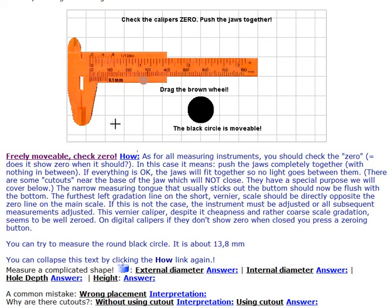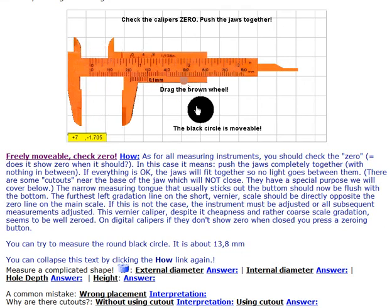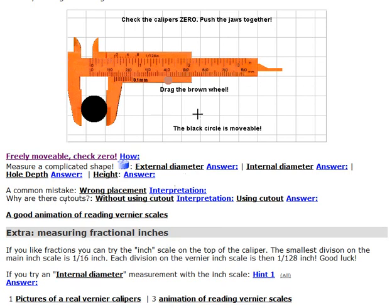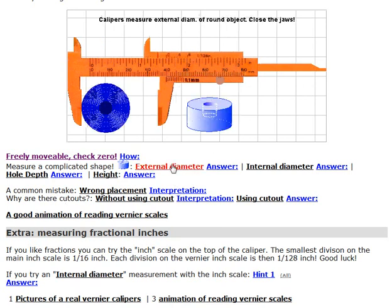The way you do it is, if you want to measure the outside diameter of something, you put it in here and you put it like this, and you get your value of how big it is. Like this, something about 13 millimeters.